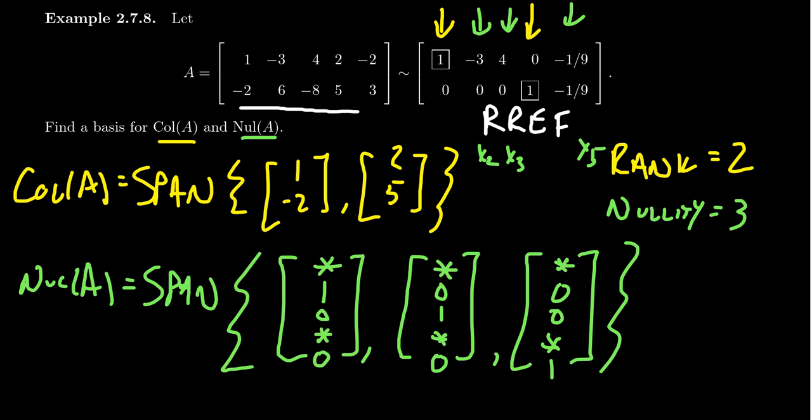Now we have to come in and fill in the stars. Let's look at the first row. So we're going to look at the first row of the matrix, you're going to look at the numbers and switch the signs. So in the column for x2, we see a negative 3, so we record positive 3. In the column for x3, we see a 4, so we record a negative 4. In the column for x5, we see a negative 1 ninth, so we replace it with a positive 1 ninth.